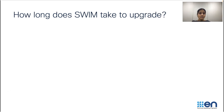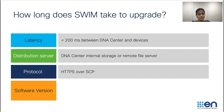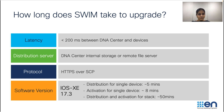Are you wondering how long DNA Center SWIM is going to take to upgrade your enterprise network? The answer is a function of multiple factors including network latency, the use of a distribution server, protocol preference, and the software image version used. It is always recommended to ensure network latency between Cisco DNA Center and your network devices is less than 200 milliseconds. For large geo-dispersed networks, leverage external distributed file servers. Always prefer HTTPS for image distribution and activation over SCP and SFTP.